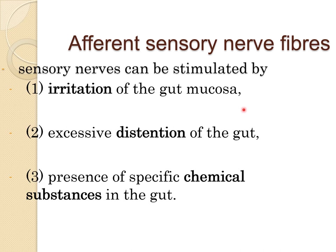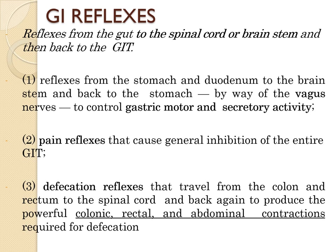Afferent sensory nerve fibers can be stimulated by irritation of the gut mucosa, extensive distension of the gut, and presence of specific chemical substances in the gut. The GI reflexes travel from the gut to the spinal cord or brainstem and back to the GIT. Reflexes from the stomach and duodenum to the brainstem and back via the vagus nerves control gastric motor and secretory activity. Pain reflexes cause general inhibition of the entire GIT. Defecation reflexes travel from the colon and rectum to the spinal cord and back, producing powerful colonic, rectal, and abdominal contractions required for defecation.